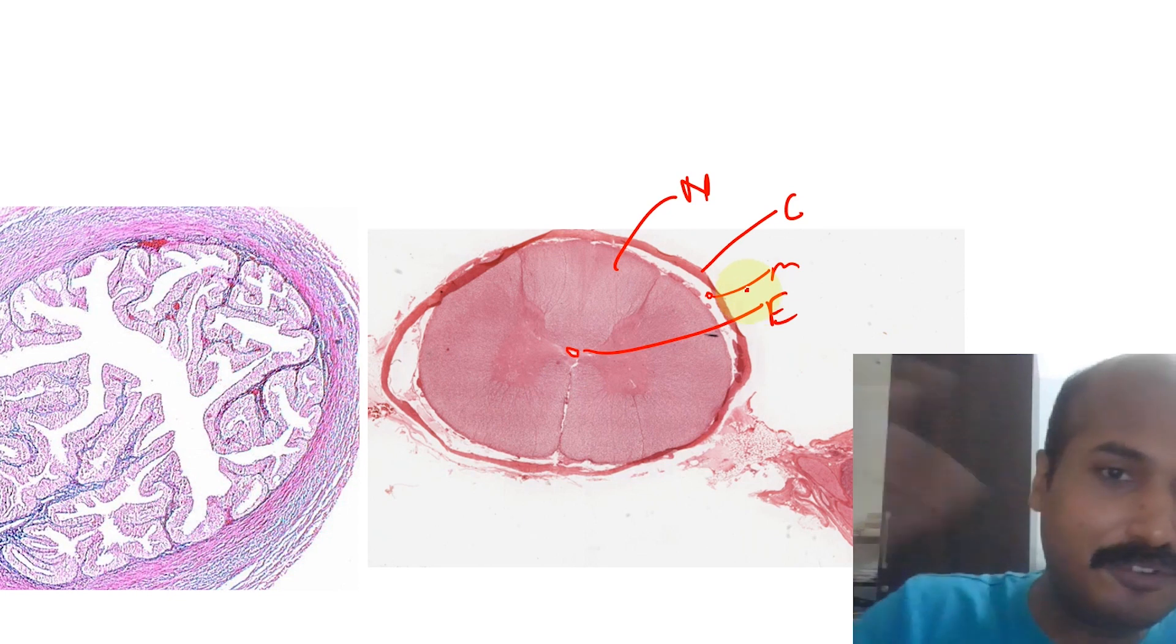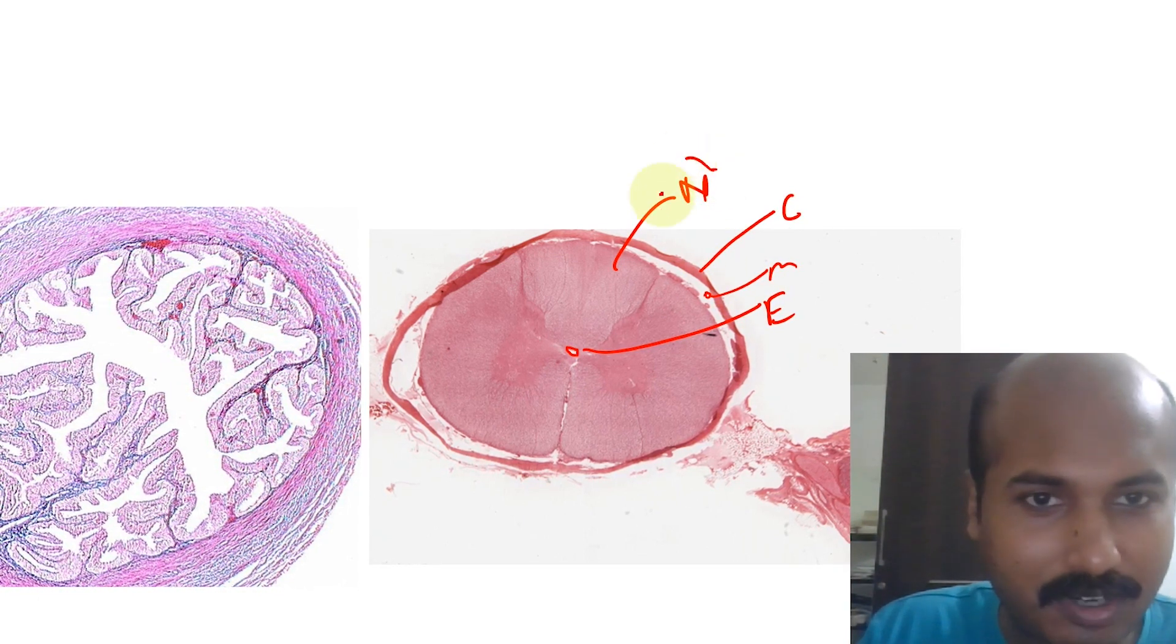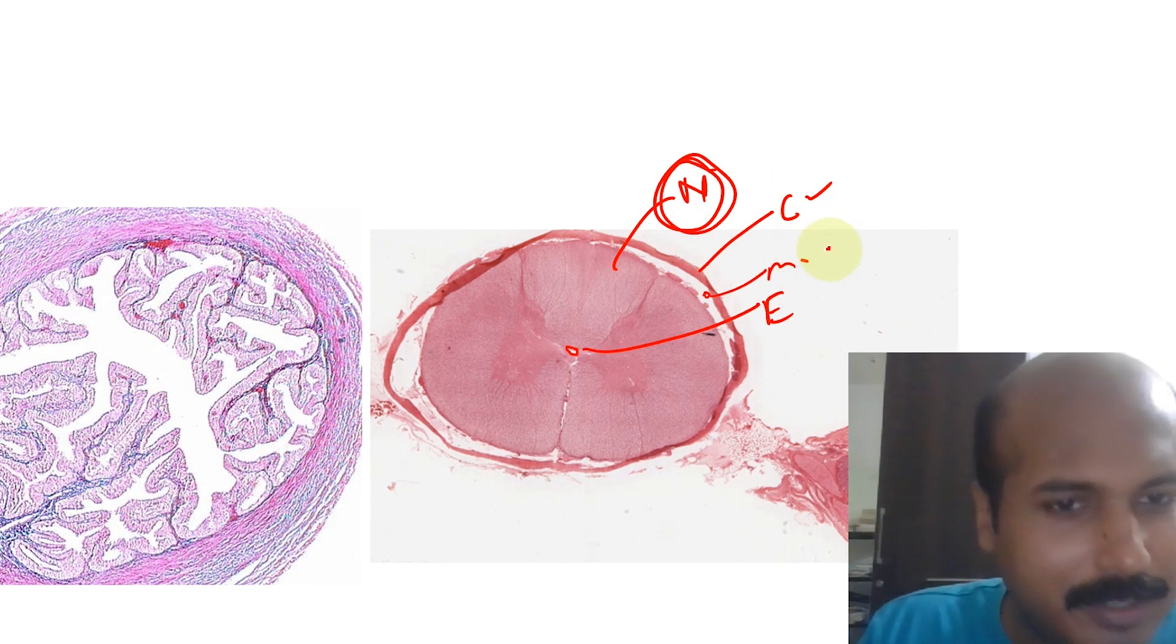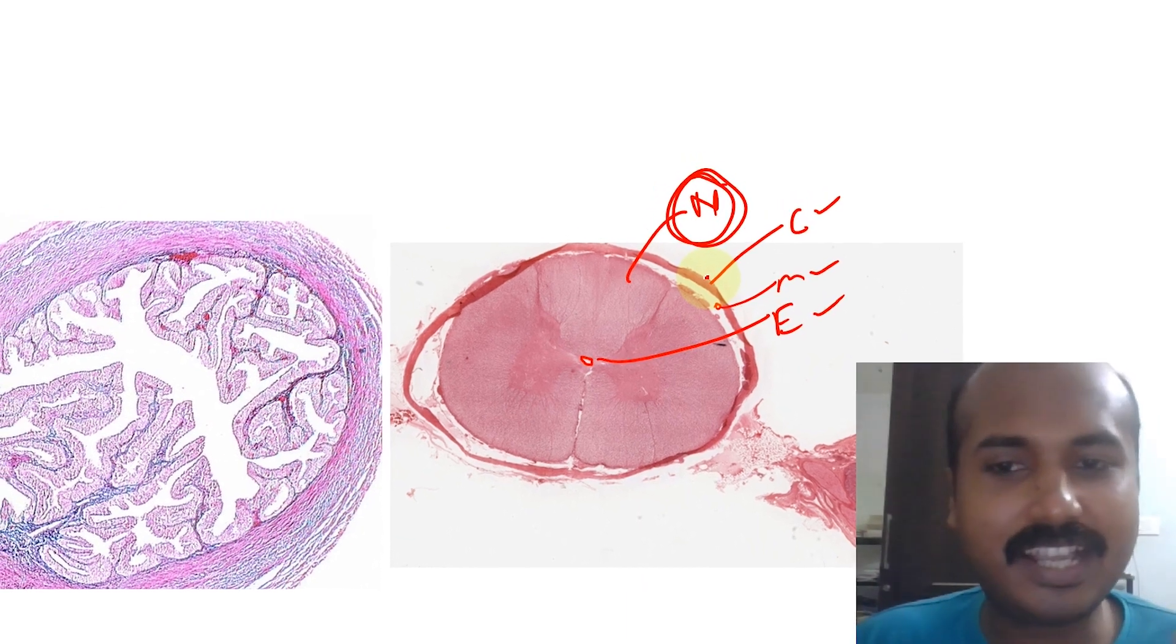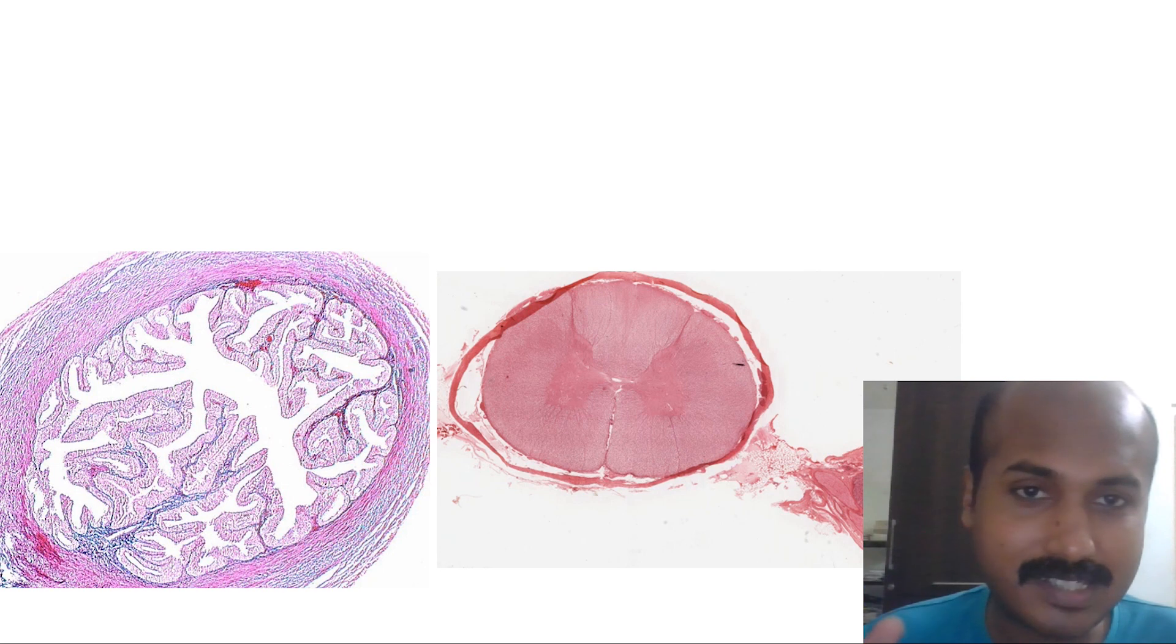So here again you can see a different proportion of different basic tissues. You know spinal cord is mostly nervous tissue, but you also have a little bit of connective tissue, little bit of muscle tissue, and a little bit of epithelial tissue. Basically, any slide you take will have the combinations of these four basic tissues.